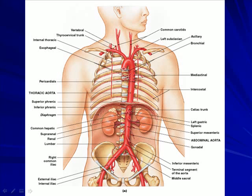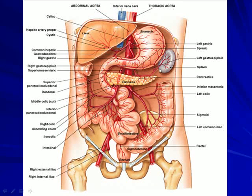The common iliac arteries further divide into the external and internal iliac arteries. The internal thoracic artery branches off into the intercostal arteries. You should be able to identify the celiac trunk or celiac artery, which gives rise to the left gastric artery, the splenic artery, and the hepatic artery.